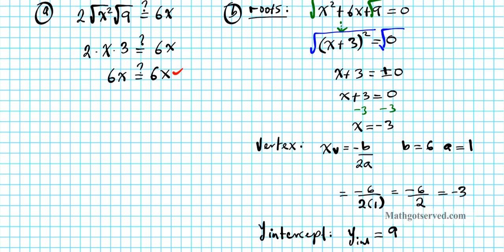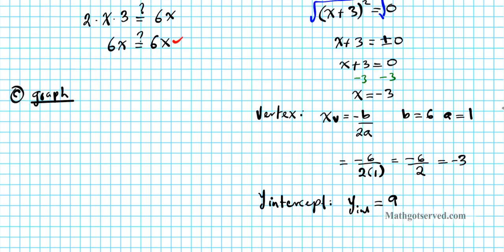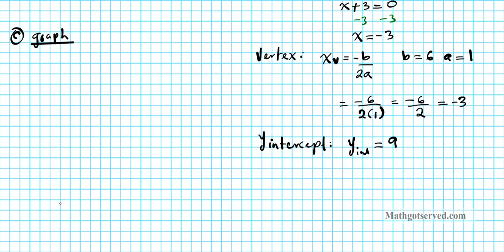Now let's do part c and graph. The vertex is at negative 3 and our y-intercept is 9. So our vertex is on the x-axis in quadrant 2. Let's set up our coordinate system and label it — this is y and this is x.